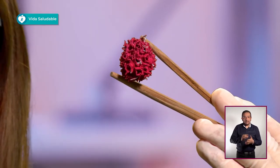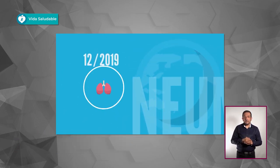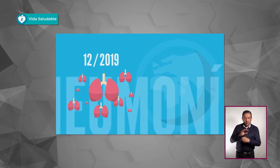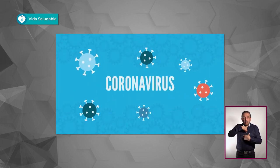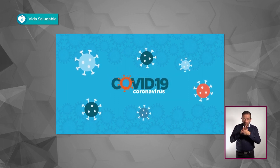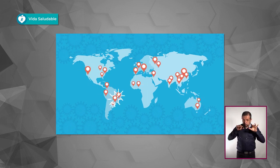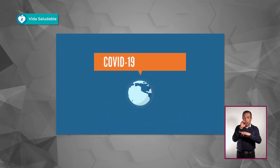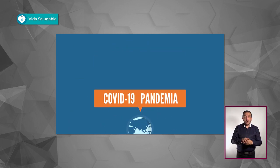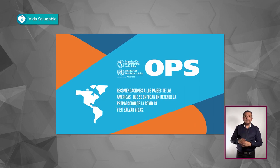El virus que más nos ha quitado el sueño es el coronavirus SARS-CoV-2. En diciembre de 2019 se detectó por primera vez un grupo de casos de una neumonía de origen desconocido. La causa fue un nuevo virus de la familia de los coronavirus que suelen generar infecciones respiratorias. La enfermedad que este coronavirus causa se denomina COVID-19. Desde entonces, el número de personas afectadas y los países con brotes se han multiplicado a gran velocidad, por lo que se ha caracterizado como una pandemia. La Organización Panamericana de la Salud está dando recomendaciones enfocadas en detener la propagación y salvar vidas.